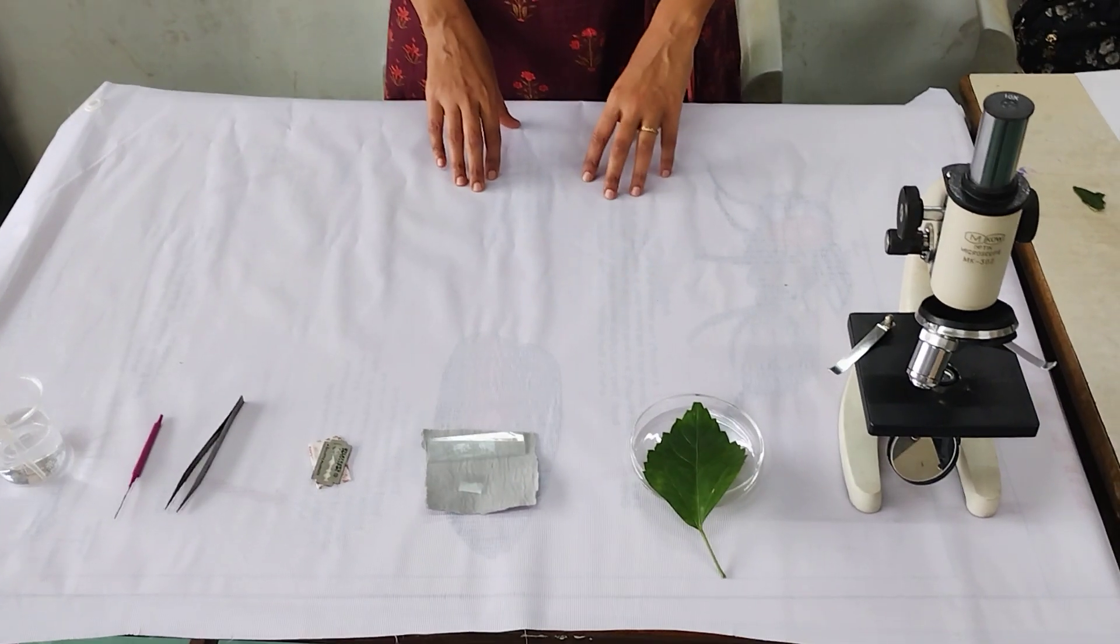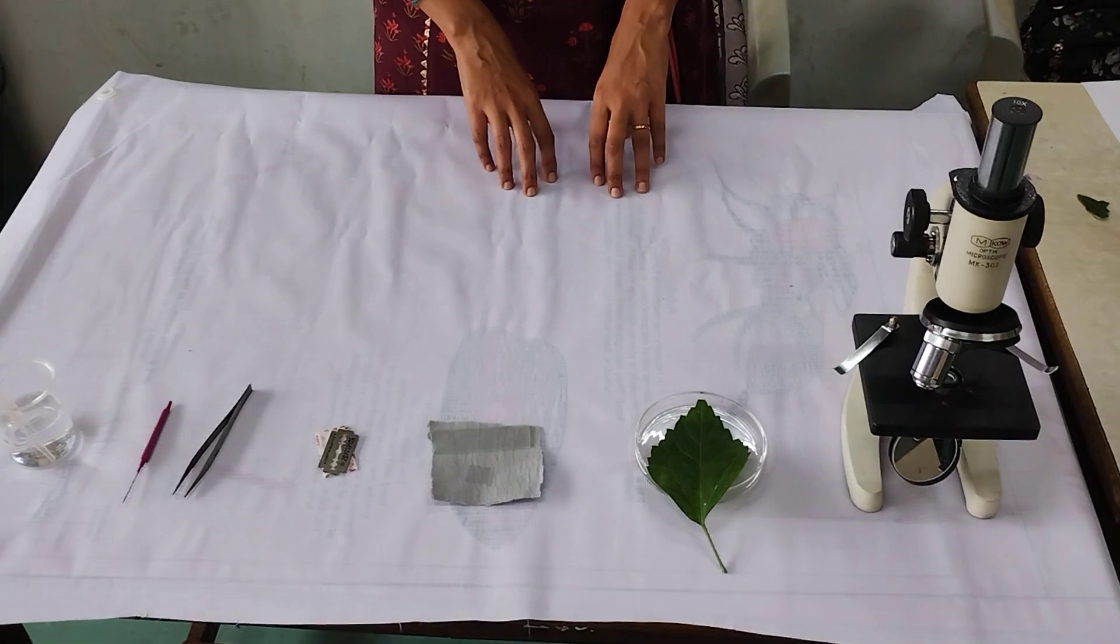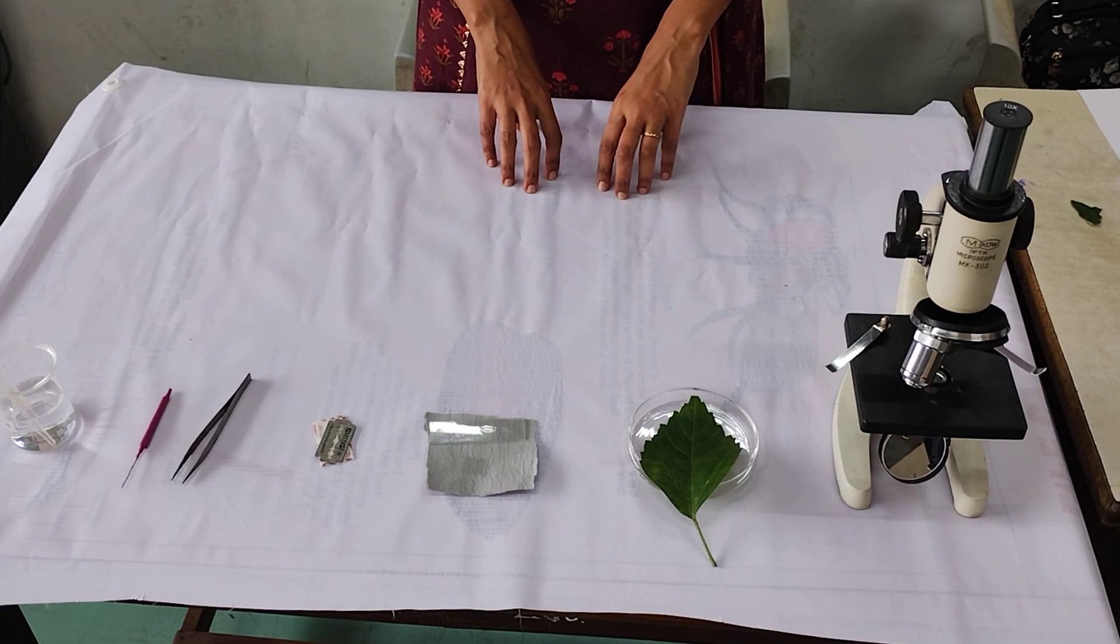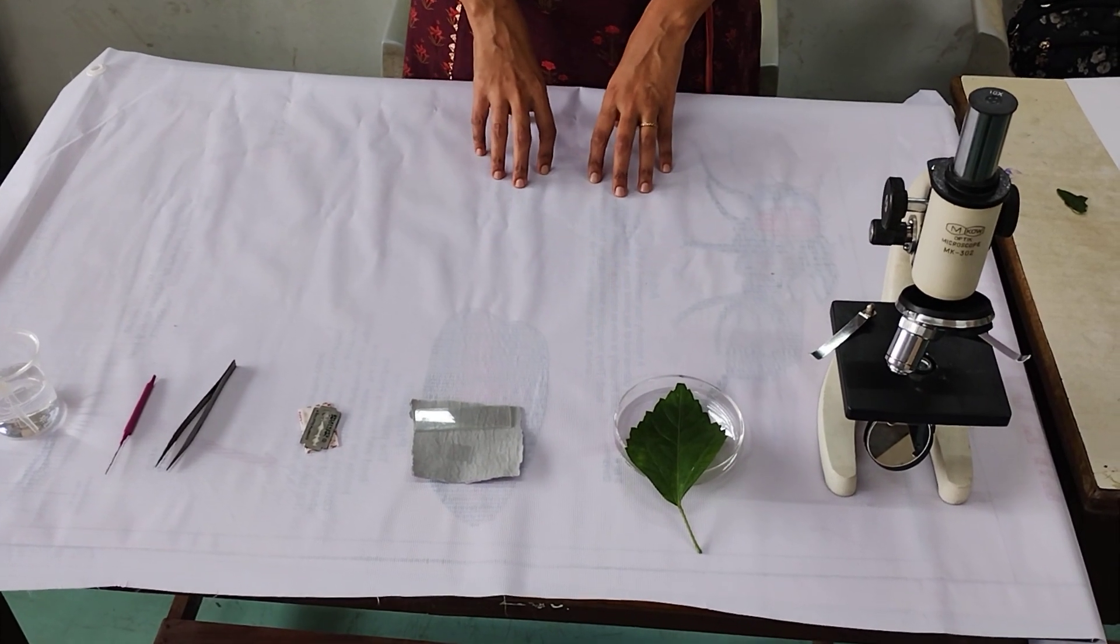CBSE board practicals, subject biology, question number 1: to study the structure and distribution of stomata in upper and lower epidermis of the dichot leaf.